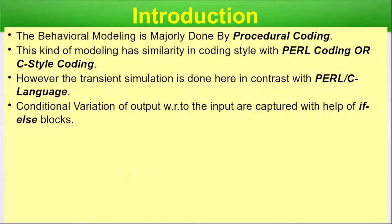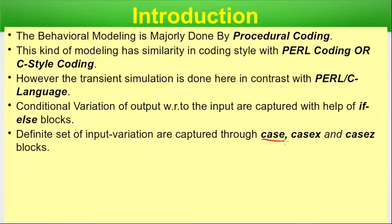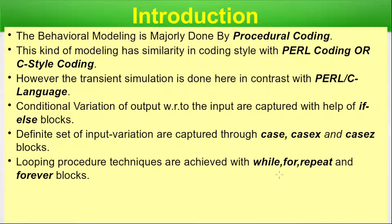Conditional variation of output with respect to input is captured with the help of if-else blocks, which is a common construct in any programming language. In Verilog we also have case, case-x, and case-z blocks — case-x and case-z being unique to Verilog. Looping techniques are achieved with while, for, repeat, and forever blocks. While and for are familiar from C or Perl; repeat and forever are new concepts in Verilog that we will explore in later episodes.